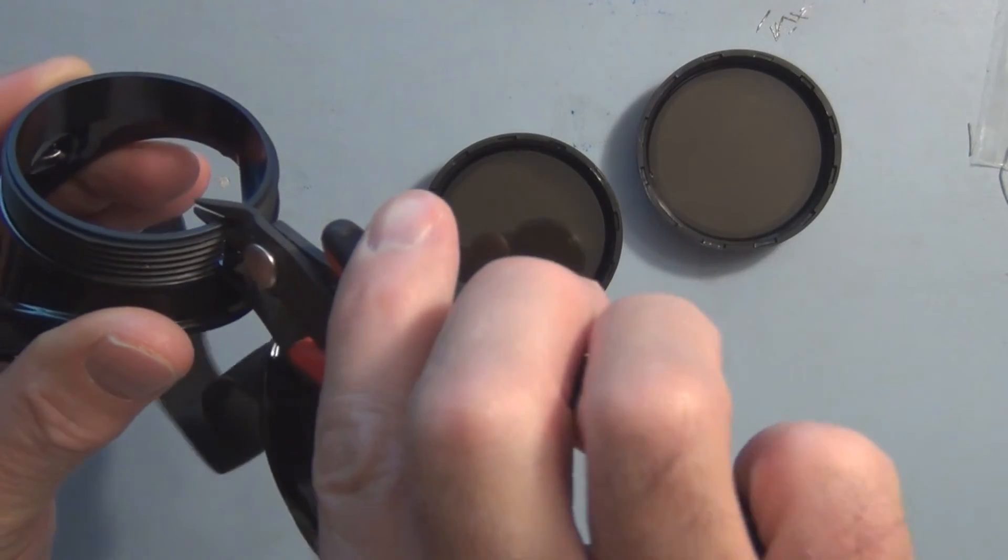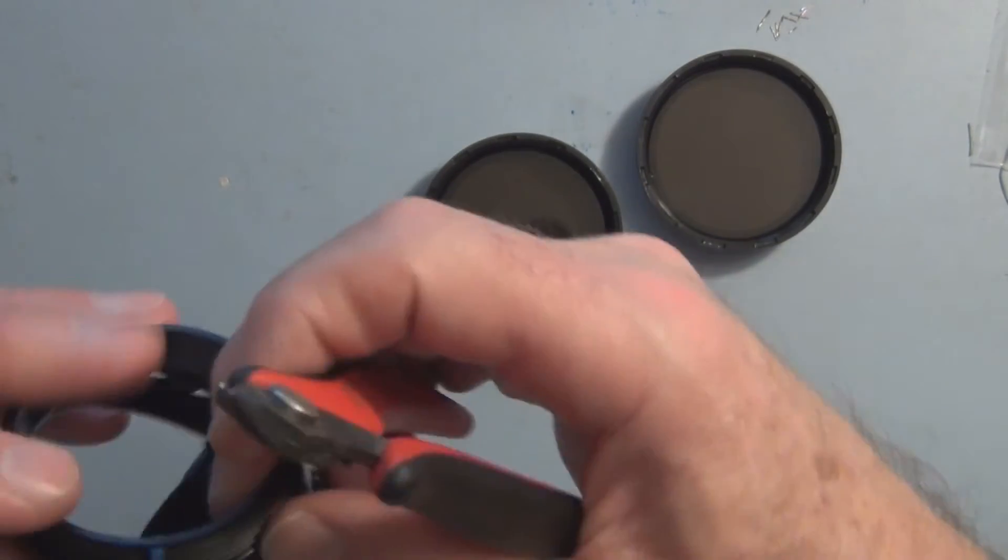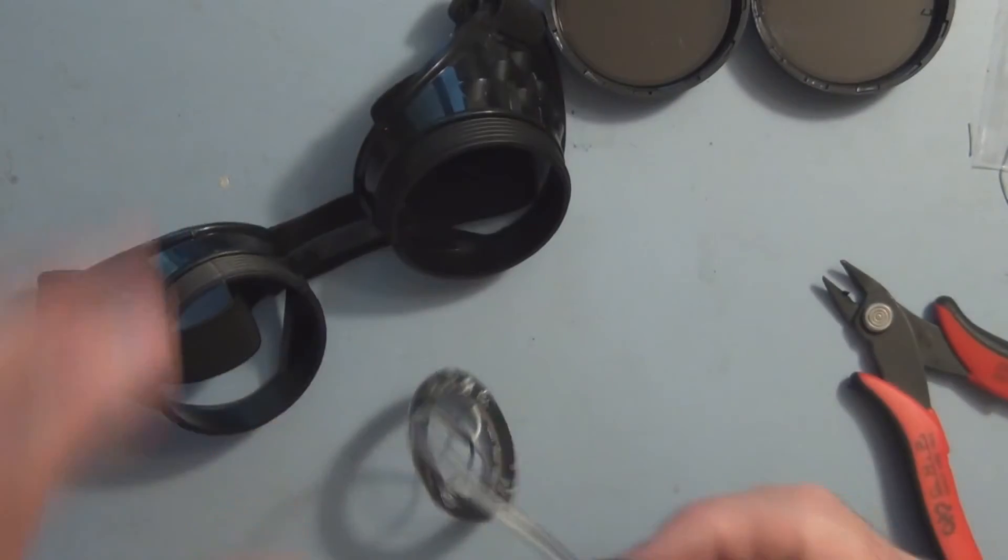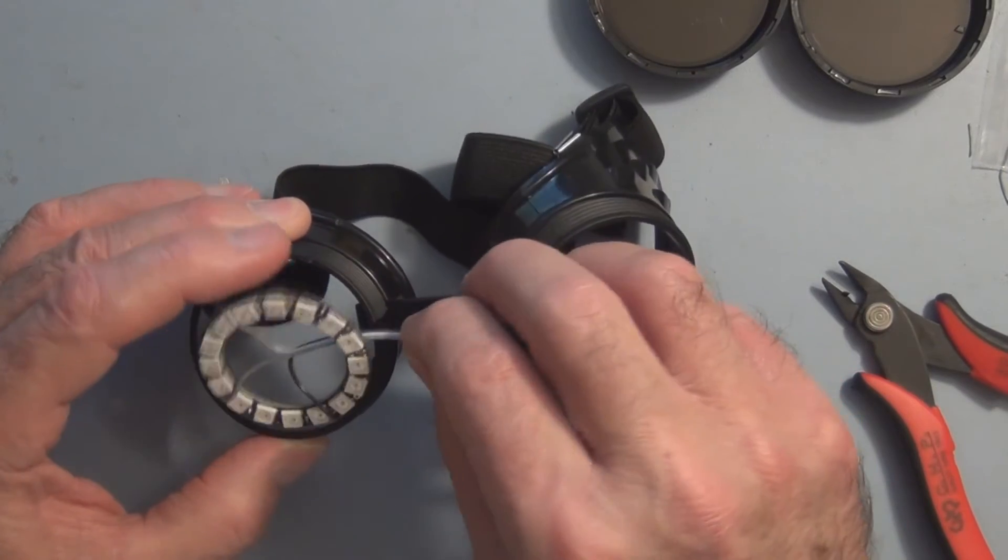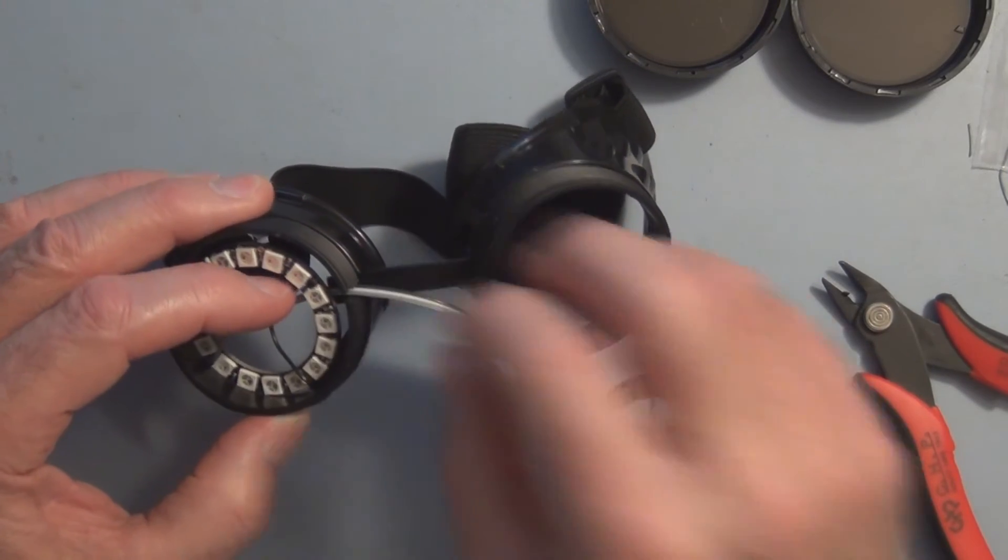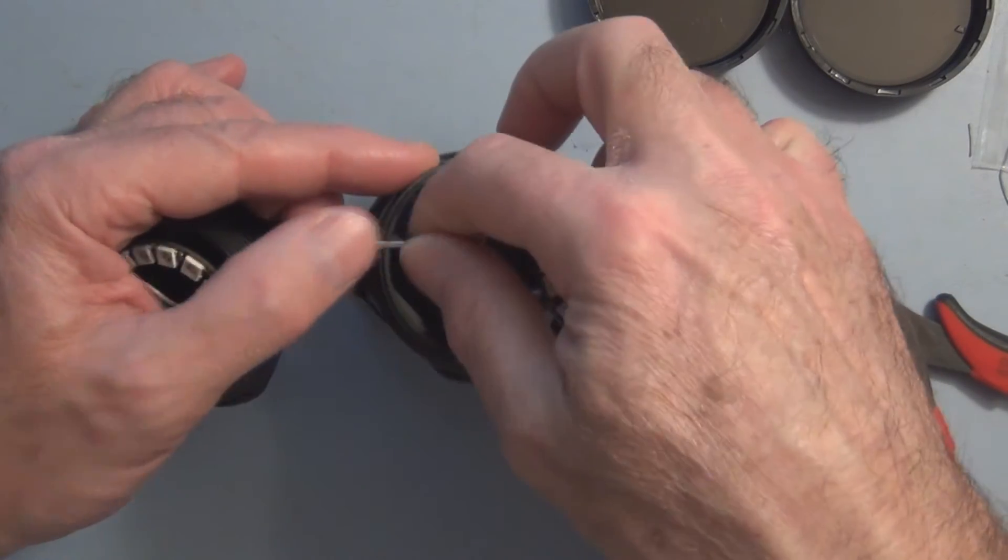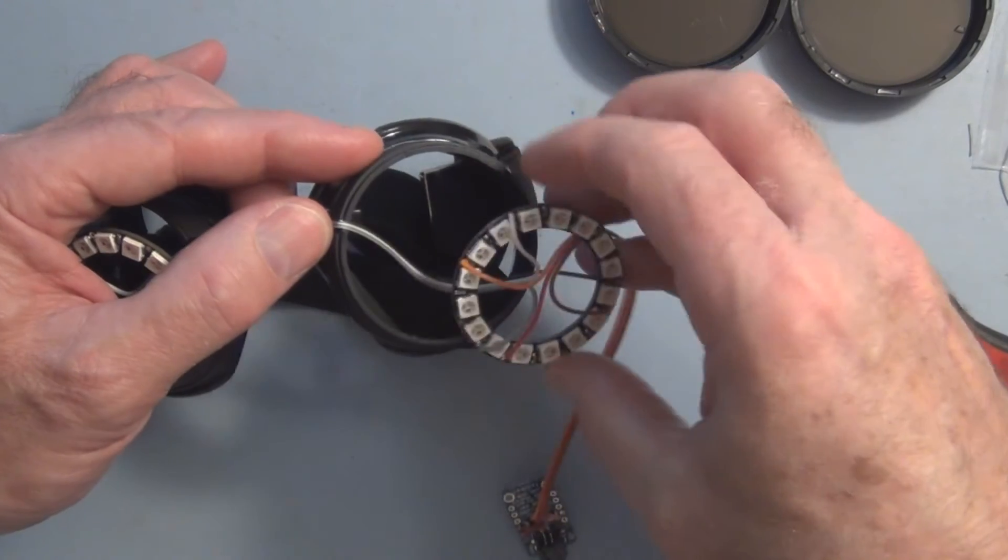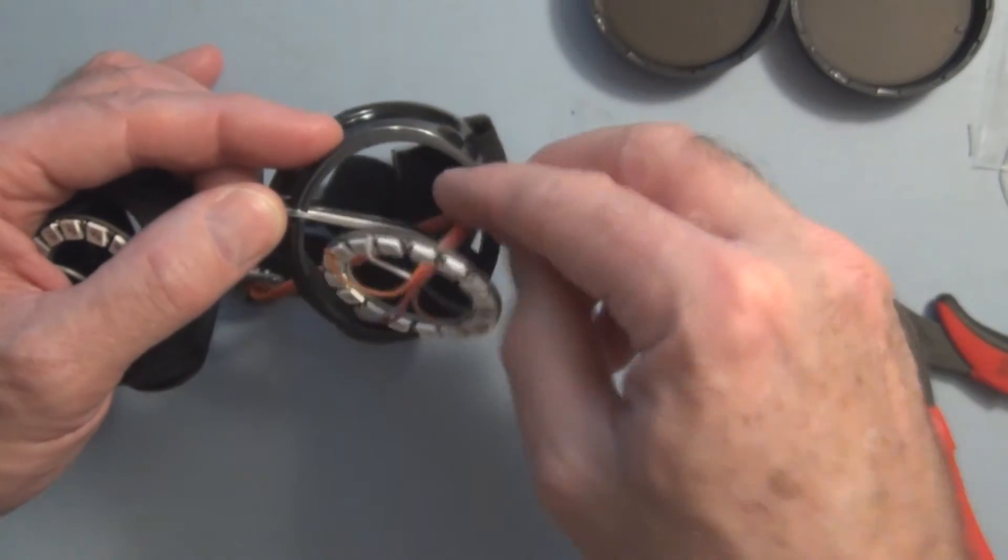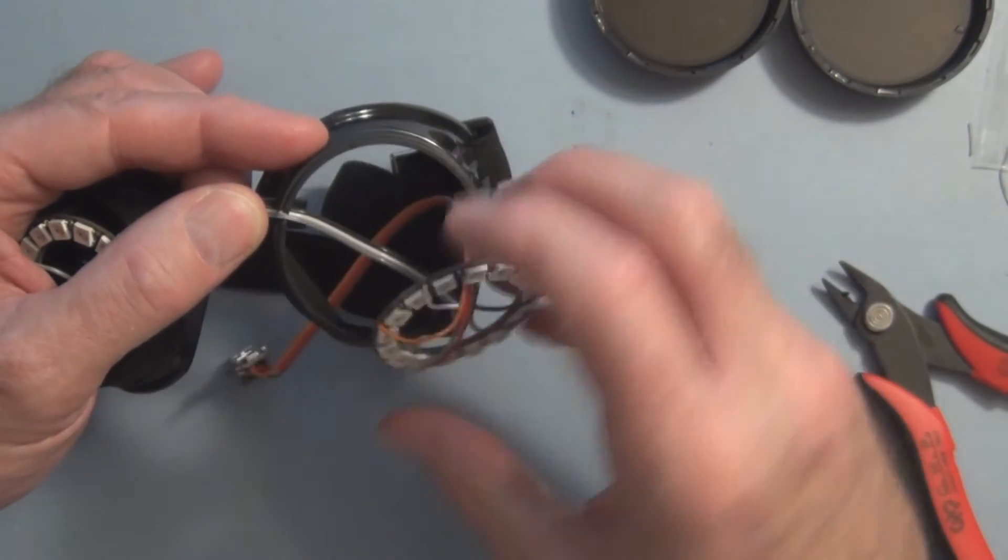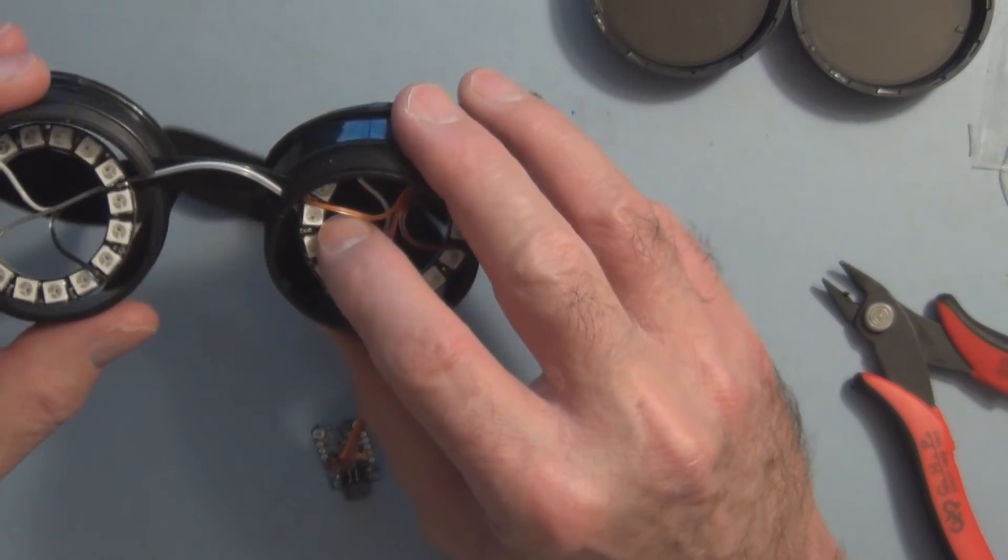So now the Neo pixel ring can go on this side. Cable comes over and this one will be in here. Let me put the trinket through there. I'm going to have to glue that.